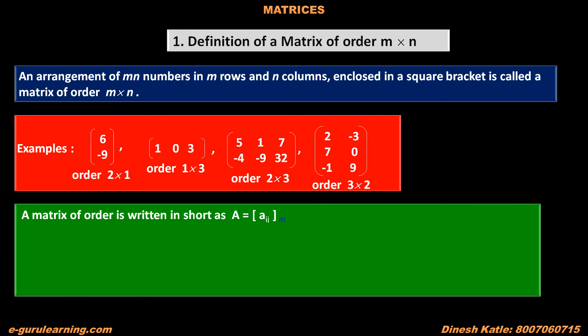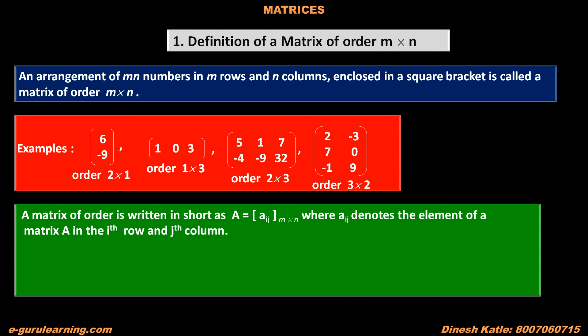A matrix of order M into N is written in short as capital A equals [Aij] of order M into N, where Aij denotes the element of matrix A in the i-th row and j-th column. For example, A = [Aij] of order 3 into 2 equals the matrix with elements A11, A12 in the first row; A21, A22 in the second row; and A31, A32 in the third row.